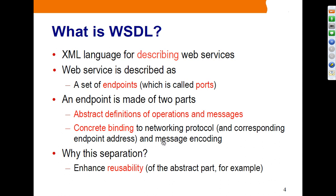SOAP could be deployed over different transports — it could be HTTP, which is mostly the case, but it could also be JMS or SMTP. When you create a WSDL document, if you have the abstract part separately, it can be imported using a different communication or networking protocol. The key thing to remember is that WSDL is an XML language for describing web services.